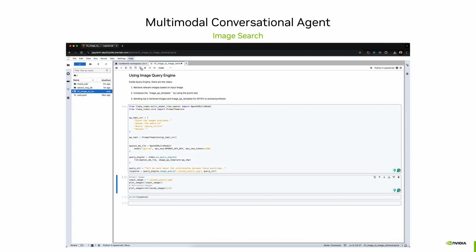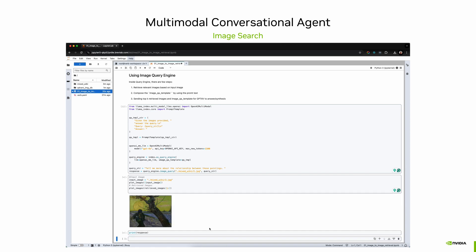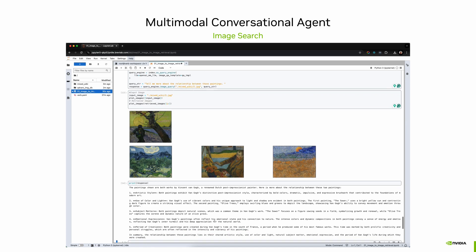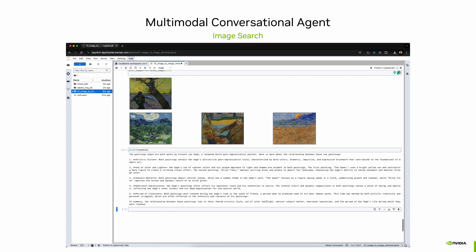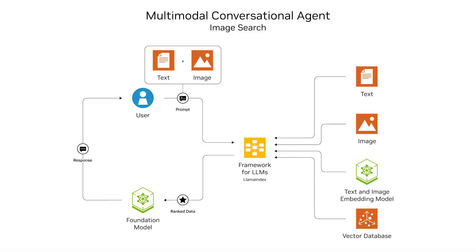A multimodal RAG application can be developed for image search as well. In past tutorials, you've seen how to leverage multimodal RAG by converting information present in images to text representation, which is used downstream to generate responses for the user. The same data architecture can be leveraged where images are stored as embeddings in a vector database and used for image search. A user provides a reference image along with a text question, and the system retrieves similar images from the vector database and generates a response.